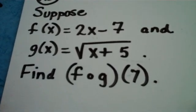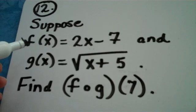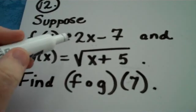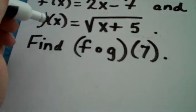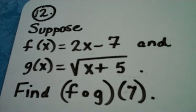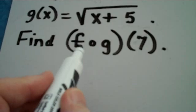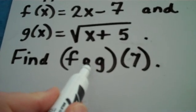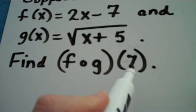Okay, let's look at this next question. Suppose I gave you the function f of x equals 2x minus 7, and I also gave you the function g of x equals the square root of x plus 5. And I asked you to evaluate f composed with g of 7.